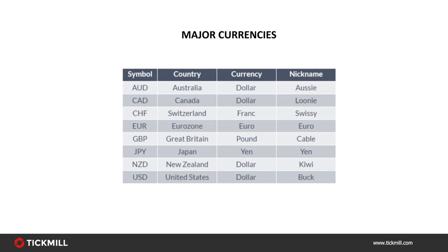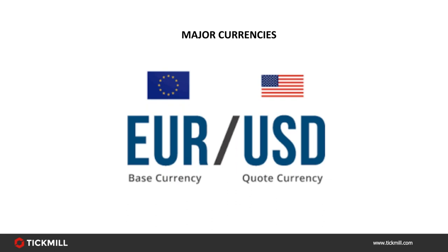Currency symbols without fail have three letters — traditionally the first two identify the country and the third identifies the currency. The exception is the euro, simply written as EUR. For GBP, GB stands for Great Britain and P stands for pounds. Two symbols are combined to indicate the currency being bought and the currency being sold. For example, buying GBP/USD means buying British pounds while selling US dollars; selling EUR/GBP means selling euros while buying British pounds.